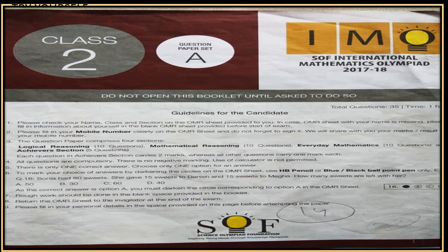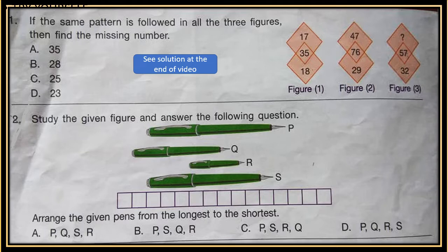Hello and welcome to Easy Olympiad Math. This is a previous year paper of IMO for class 2, set A. New users, subscribe to the channel and hit the bell icon to get notifications for new uploads. Let's start the video.